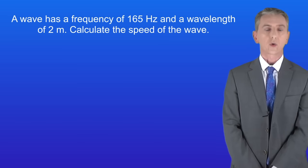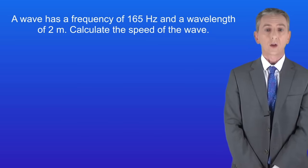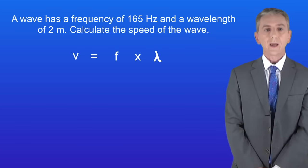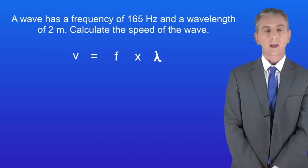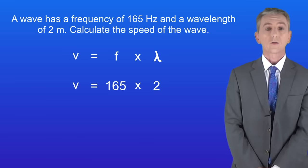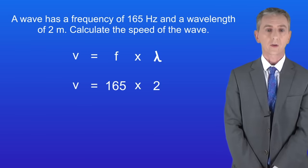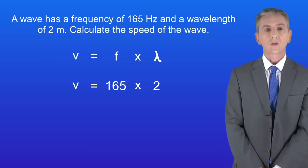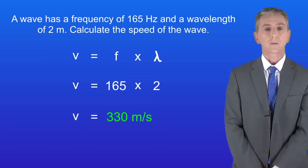Okay, so this is a fairly straightforward question. We're given the frequency and the wavelength, and we've got to calculate the speed. So the wave speed equals the frequency multiplied by the wavelength. The frequency is 165 Hertz, and the wavelength is 2 meters. Multiplying 165 by 2 gives us a wave speed of 313 meters per second.